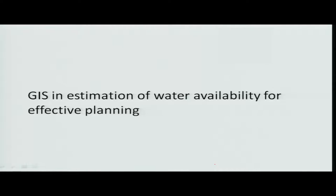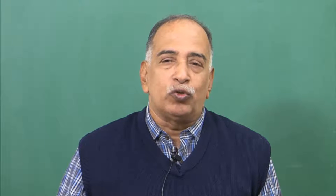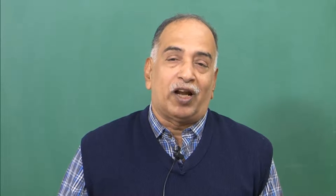Welcome to AG MOOC lectures. This week we are going to talk about GIS in estimation of water availability for effective planning — water availability for different crop area planning activities, farm-related issues, how it could be assessed and made use of. This week we are going to talk about surface runoff assessment and the different models being used for water availability studies.